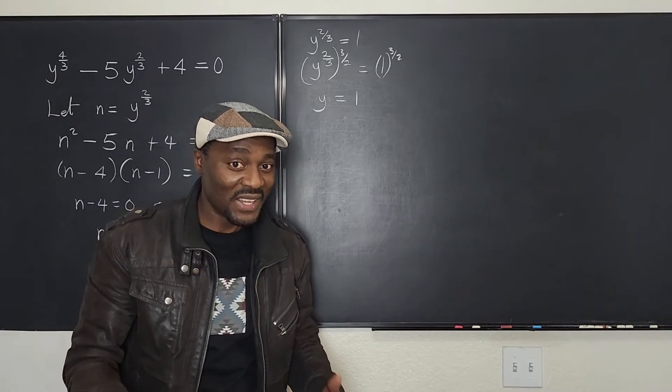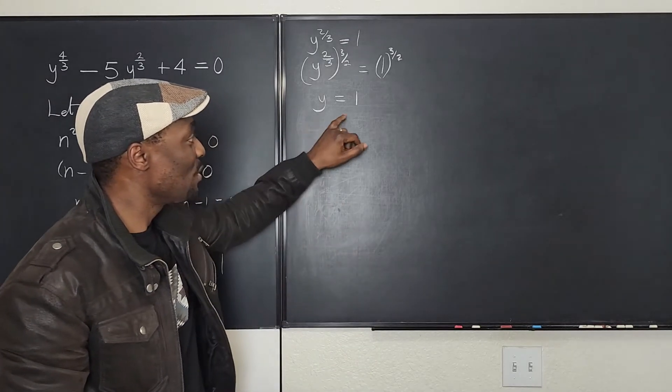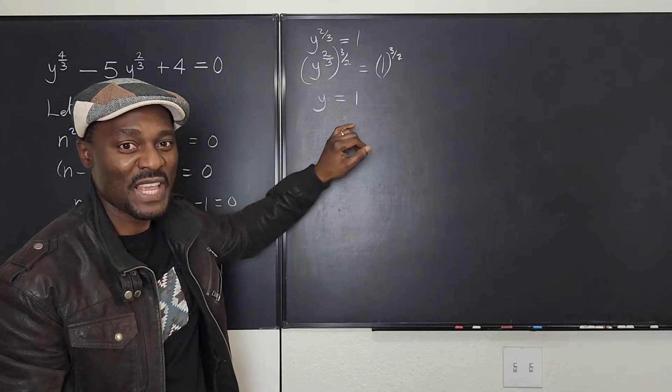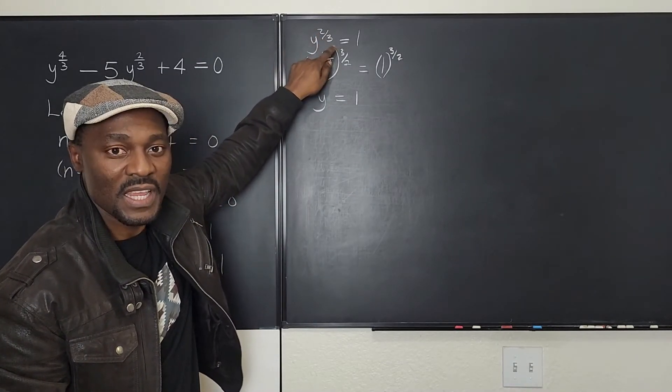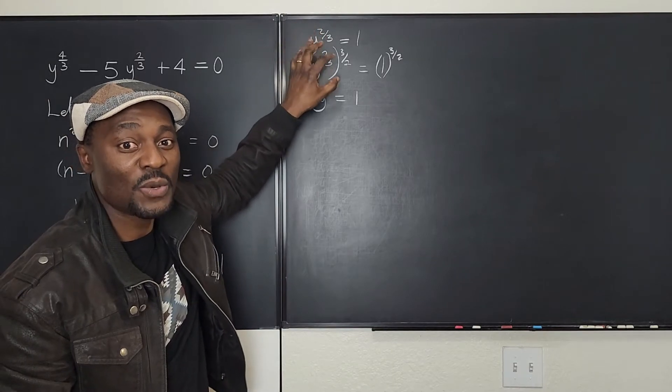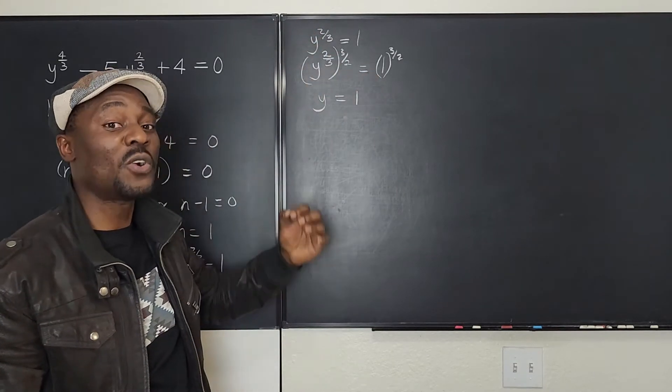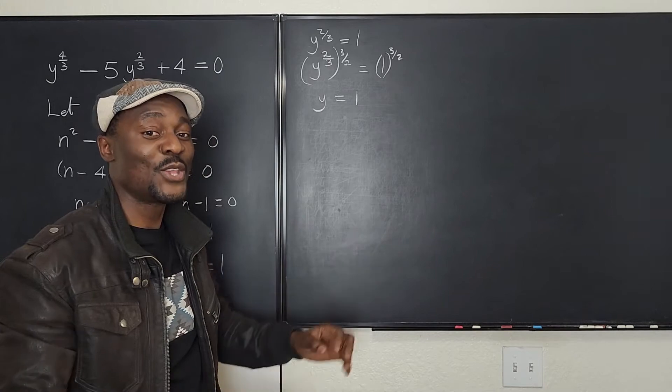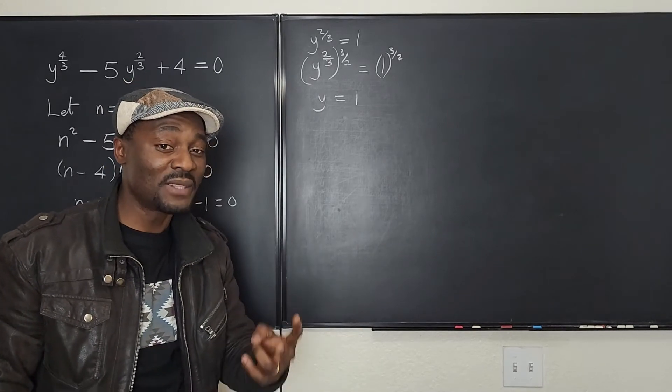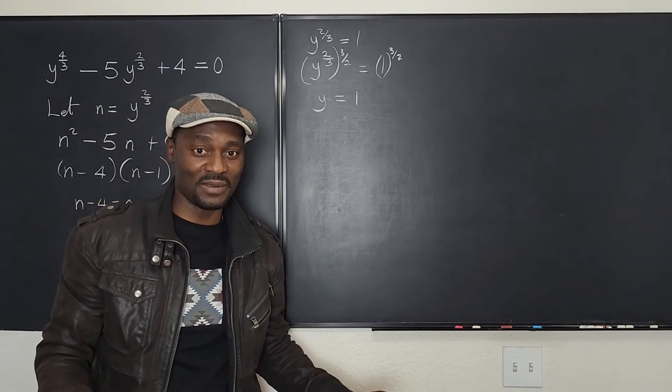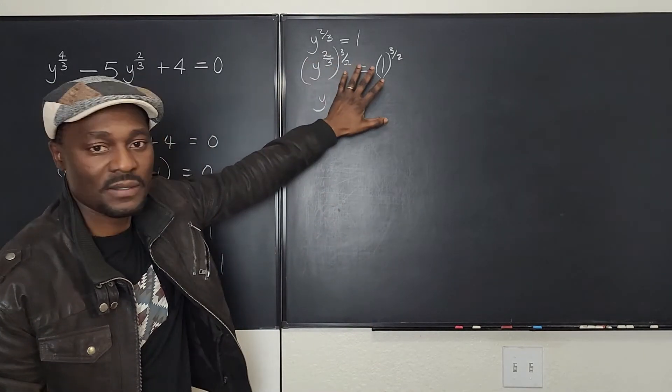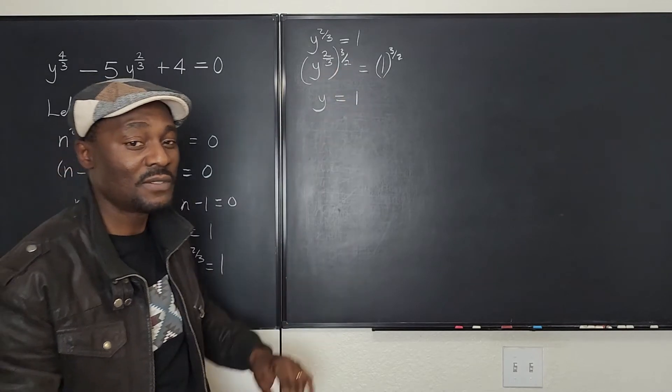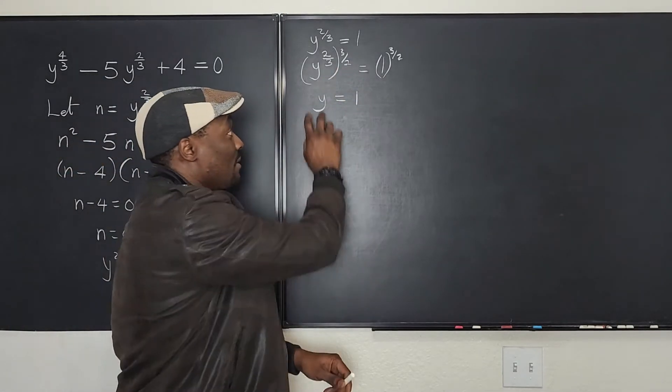You're wrong because this gives you one solution. You're supposed to get two solutions because this y to the two-thirds is actually the square of y to the one-third. So every time you solve a square equation, you're supposed to get two answers, fundamental theorem of algebra. So what we're going to do is we're going to go back here and fix this.